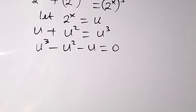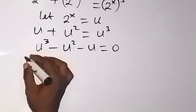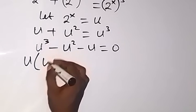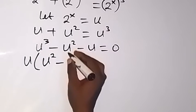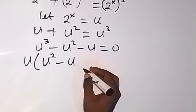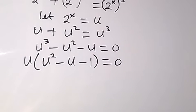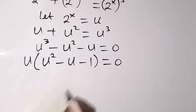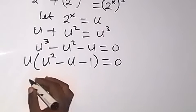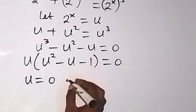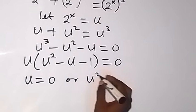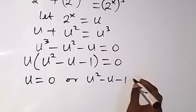By factoring u out, we bring one u out, and what is left is u squared minus u minus one, equals zero. Then since two numbers multiply to give zero, either of the numbers could be zero. So we have u equals zero, or we have u squared minus u minus one equals zero.